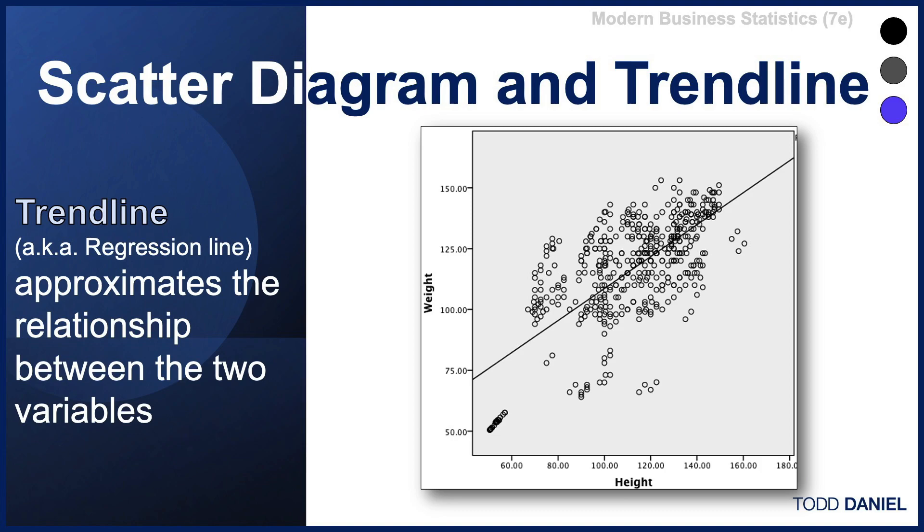The regression line can also be used for prediction. For instance, if I move across the x-axis and find the height of 120 centimeters, I can move up to the regression line and finding the intersection.